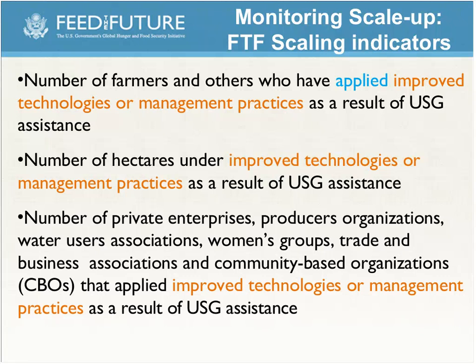All three indicators are disaggregated by new and continuing. 'New' refers to the first-time application of an improved technology or practice, while 'continuing' means the farmer is applying it in the reporting year and also applied it in the previous year — so it covers two consecutive years of application.